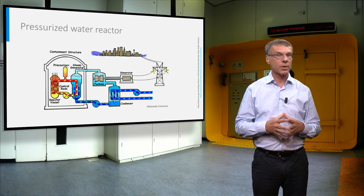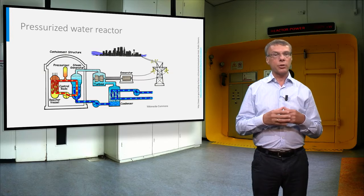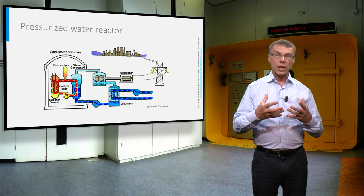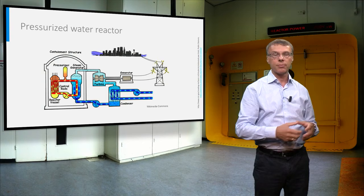The heat is transferred to a secondary loop with lower pressure, leading to the formation of steam that drives the turbine. A generator connected to the shaft of the turbine produces electricity. After expansion, the steam is condensed to water and pumped back to the steam generator.